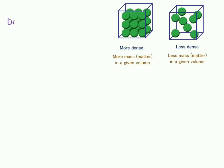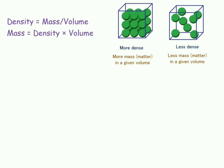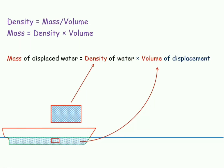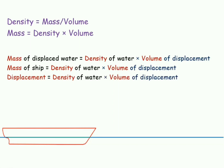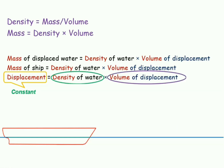The density of an object is defined as mass per unit volume, and alternatively, mass can be defined as density multiplied by volume. Applying this to ships, mass of displaced water equals the density of water multiplied by the volume of water displaced. As per Archimedes' principle, mass of displaced water equals the mass of the ship, and mass of ship is called displacement. If on any particular voyage the displacement remains constant and the density changes, the volume of displacement must also change accordingly.